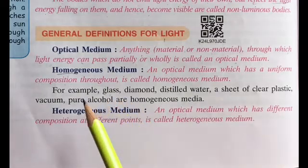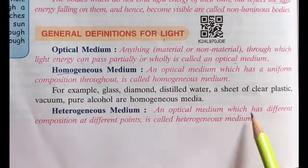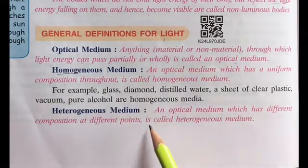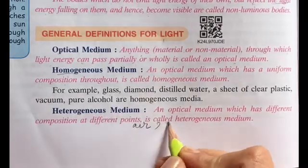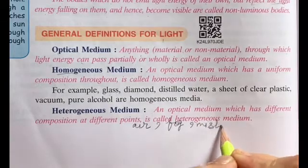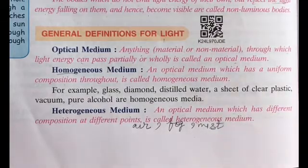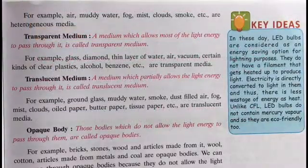Heterogeneous medium is where the composition becomes more at some places and less at others. The optical medium which has different composition at different points. Like air, fog, mist, clouds - these are all heterogeneous medium.